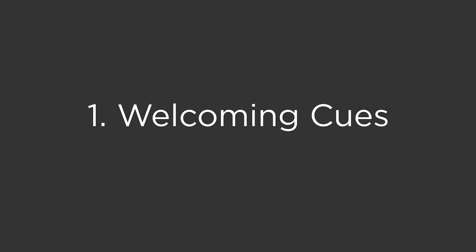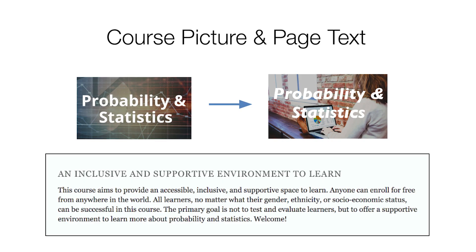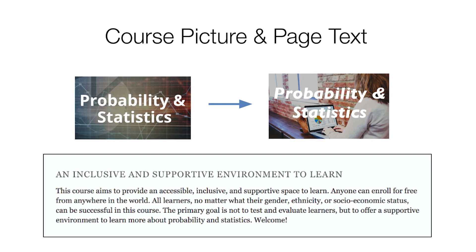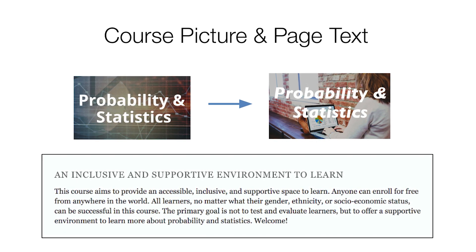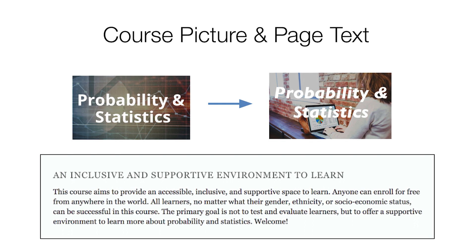Be mindful of the different cues that might communicate whether someone belongs in an environment. Everything from the image used on the course registration page or the first images students see — do they see people like them in that image? Or is it reinforcing the sense that "I don't belong here because I'm not a techie coder like those people" in a CS course. Think about the image, the text, that first experience: is this course for me? Is there a statement about diversity and inclusion?